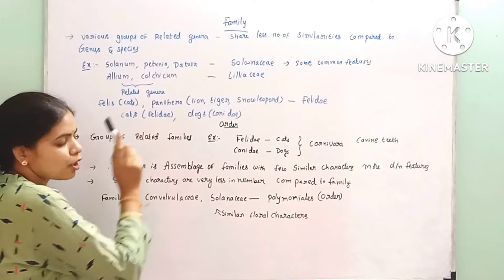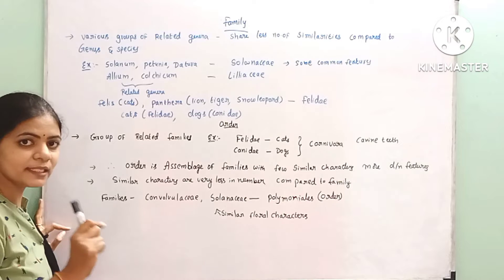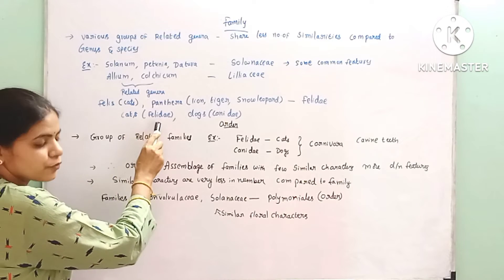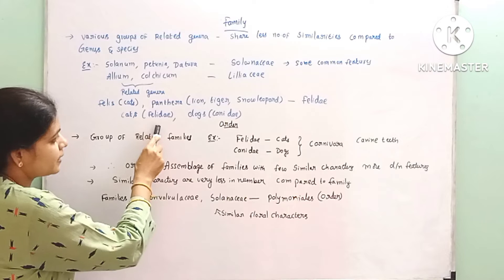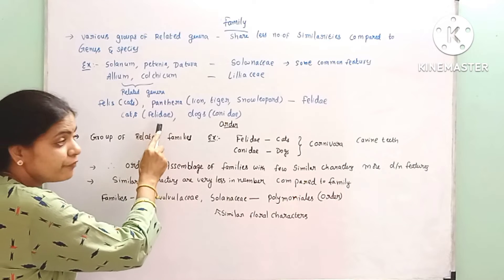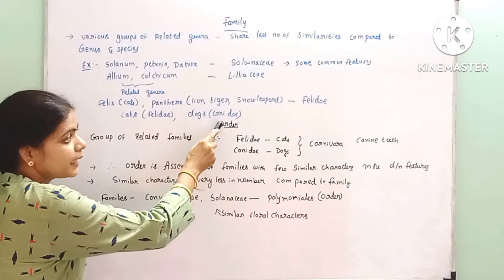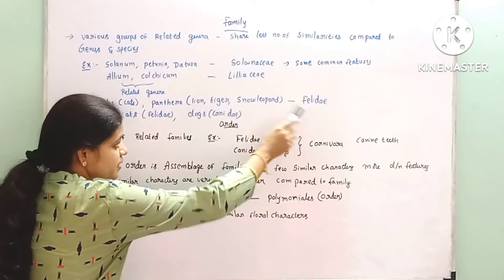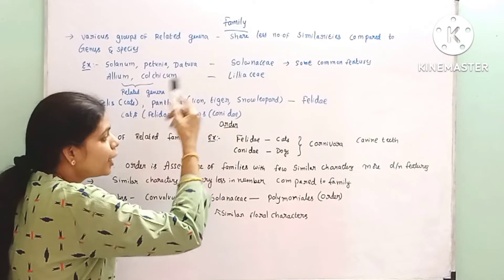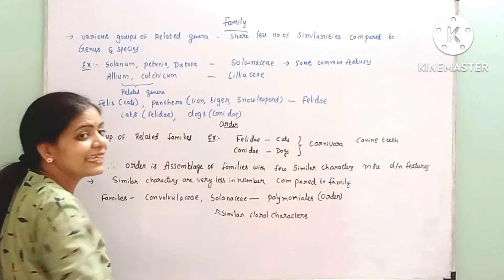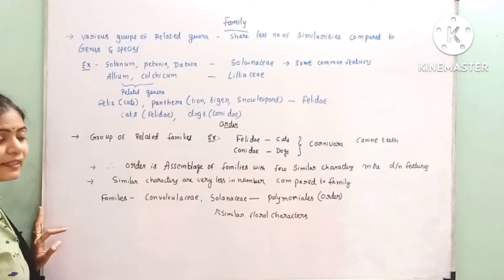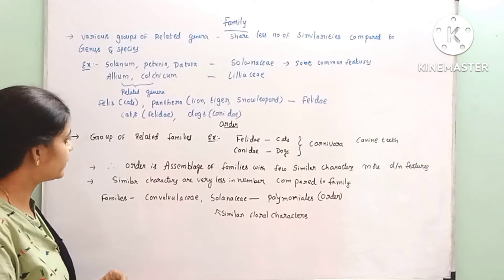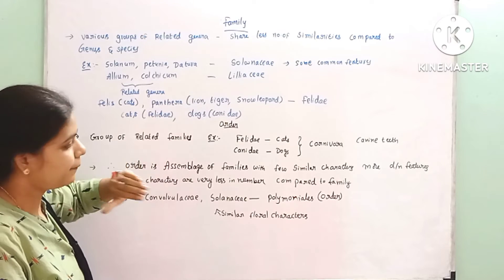When we compare cats and dogs, they have quite different characters. Cats belong to the family Felidae, and dogs were kept in another family, Canidae. Because they have different characters, they are placed in different families.